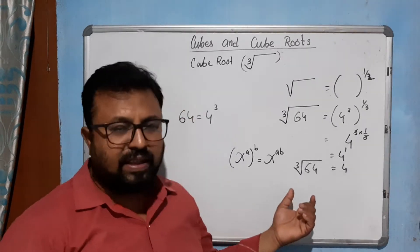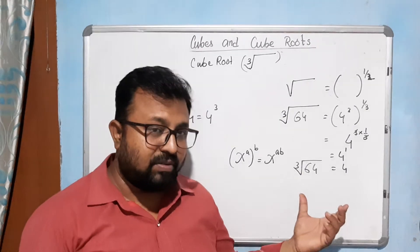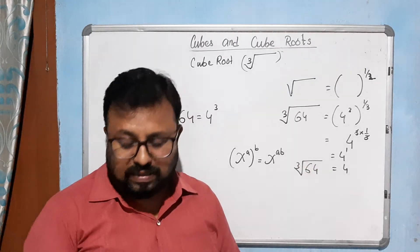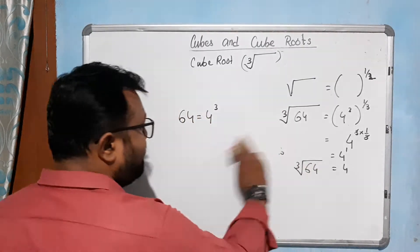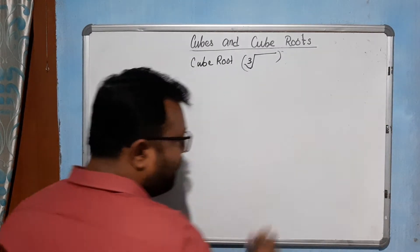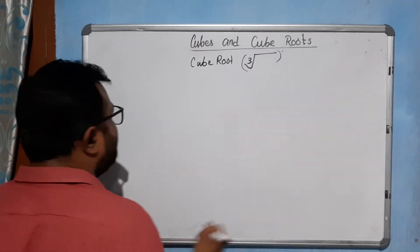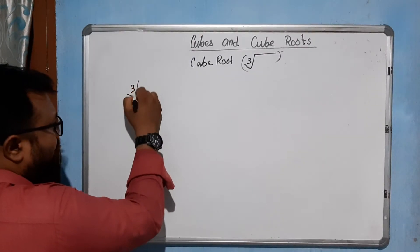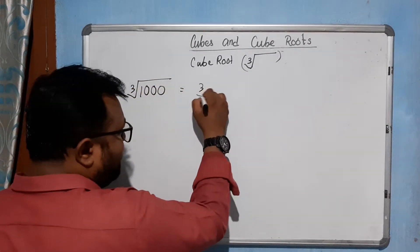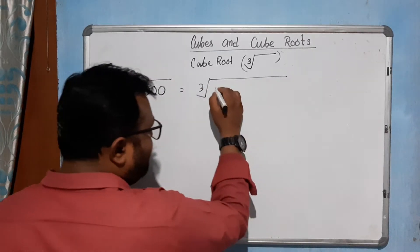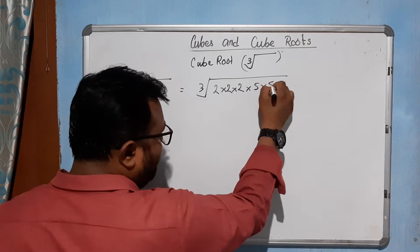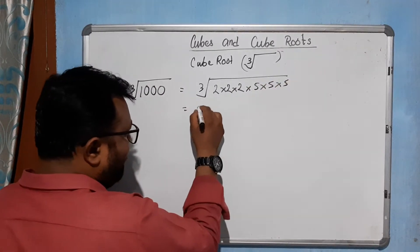These are small values and very easy to find. Now how will we find the cube root of larger values? Let's see. Take the cube root of 1000. You know the prime factors of 1000: 2 × 2 × 2 × 5 × 5 × 5. We can write these as triplets.